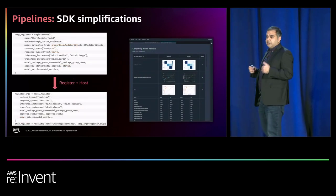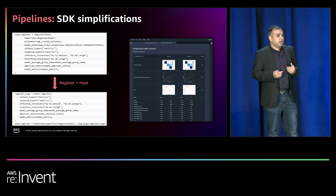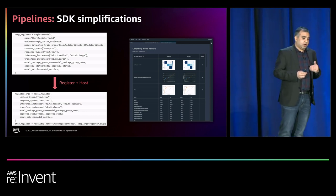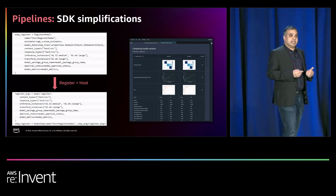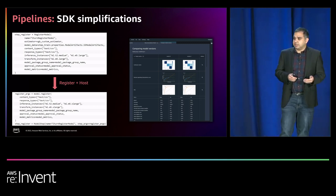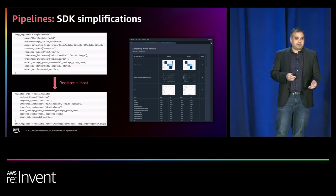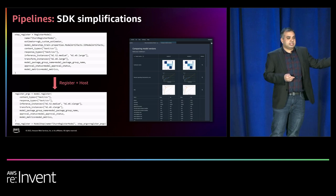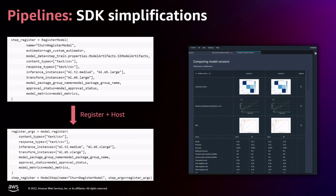Finally, one of the resounding pieces of feedback we've gotten, both for our UI and our SDK, is simplification. We have shipped more than half a dozen simplifications to the Python SDK. For example, we took two separate steps to register a model and create model artifacts and boiled it down to one step, making it easy to add that final registration and creation step into your pipelines.